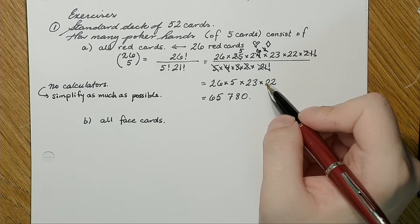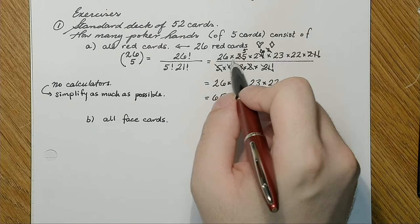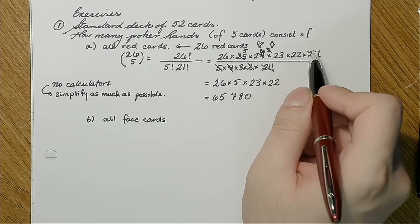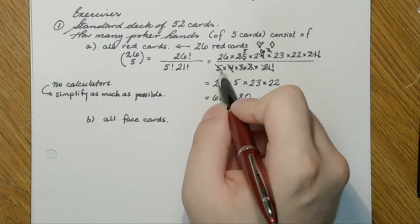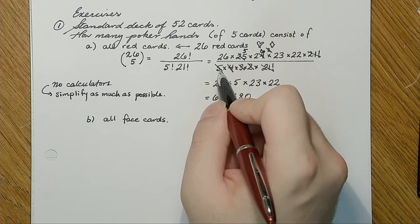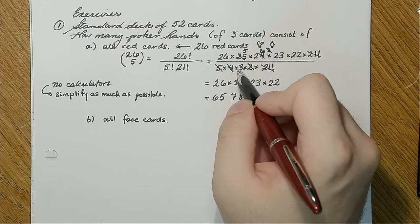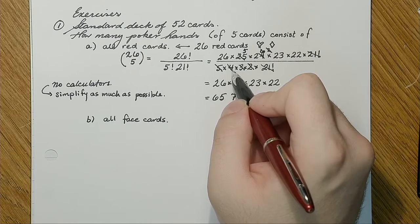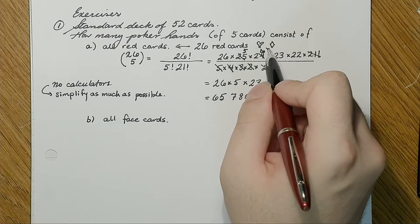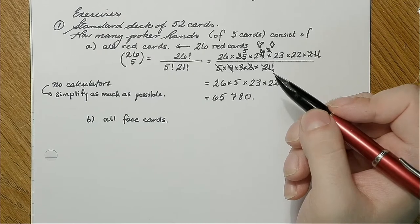Why could you cancel out the 25 and the 24 in the denominator? So what I had up here was 26, 25, 24, 23, 22, 21 factorial. I cancelled out the 21 factorial. I also have 5 factorial: 5 times 4 times 3 times 2. So 25 divided by 5 is 5, I wrote 5 up here. Then 24 divided by 4 is 6. Then 6 divided by 3 is 2. Then 2 divided by 2 leaves just 1. That's what I was doing.